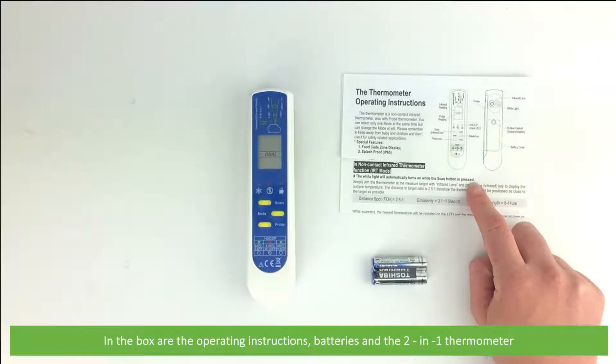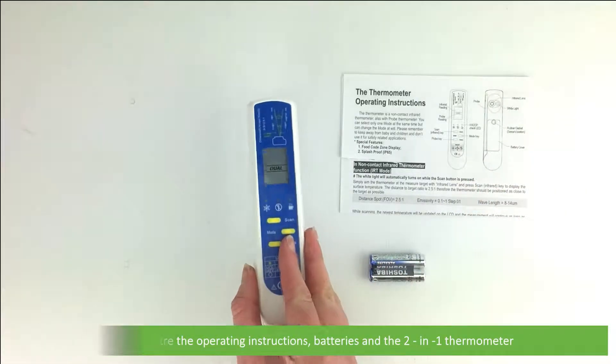In the box are the operating instructions, batteries, and the two-in-one thermometer.